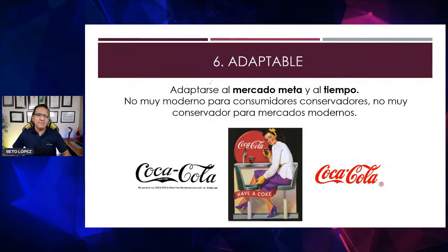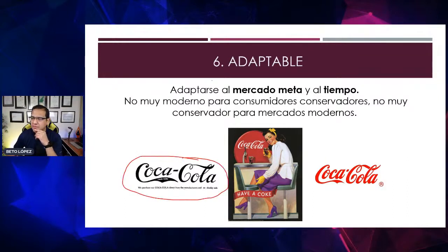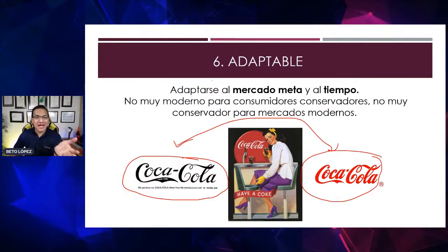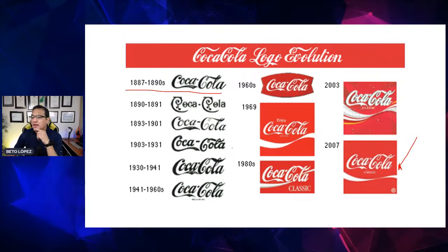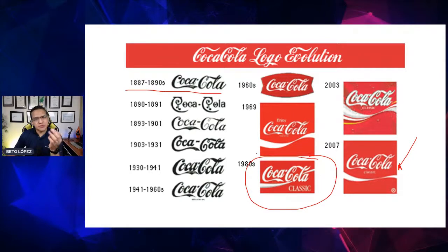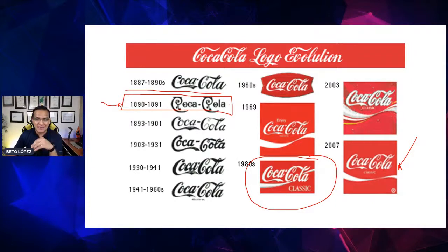Número seis: que el logotipo sea adaptable. Que sea adaptable quiere decir que con el paso del tiempo le hagas un cambio muy mínimo y el logotipo permanezca por muchos años más. No quiere decir que estés cambiando el logotipo a cada rato. El logotipo de Coca-Cola es para mí uno de los mejores a nivel mundial porque desde que inició hasta hoy su esencia se mantiene. En algún momento intentaron cambiar su fórmula y la letra, pero no funcionó y volvieron a la base.